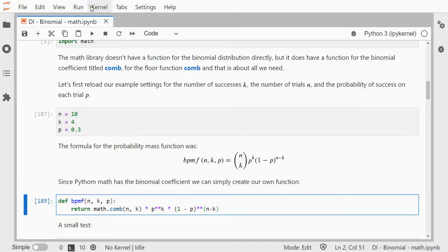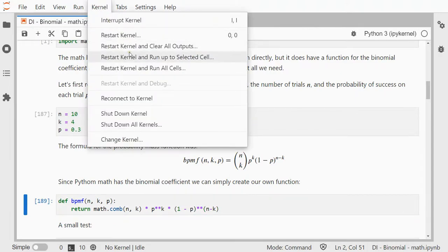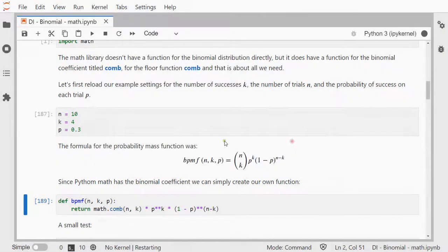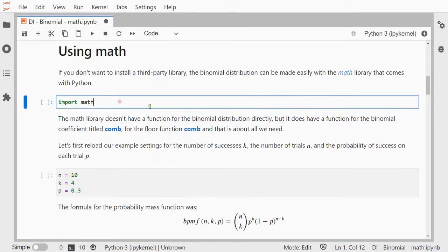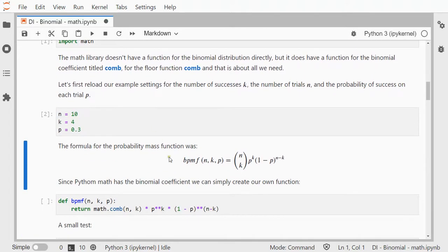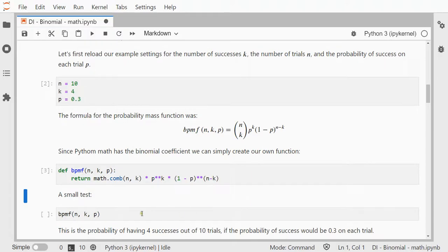I might need to restart my kernel. Restart kernel and clear all outputs. So I'll load in math, load in my examples, and this little function here will now calculate for me the binomial probability mass function of 0.2001.